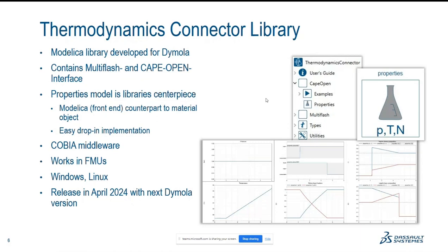So the Cape Open interface consists of a few examples and the properties model. The properties model is the interface that you can easily implement into your Modelica model just by drag and drop implementation. You don't need more. You just have to connect the inputs to the properties model and connect the desired outputs you want to use in your Modelica model. And you're ready to go and have external calculated fluid data within your system simulation.